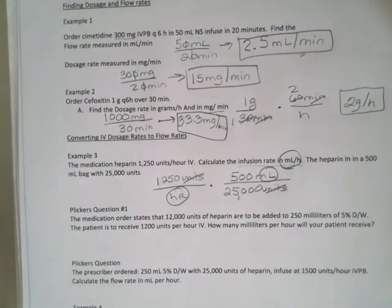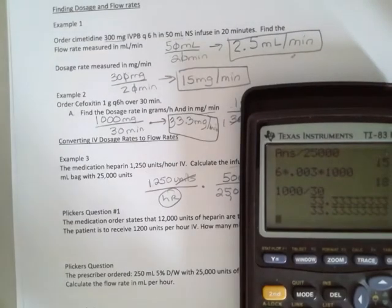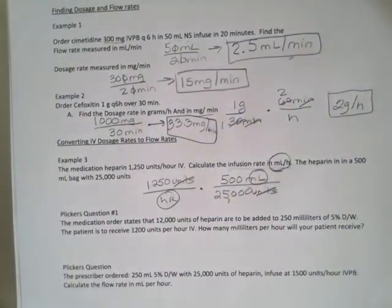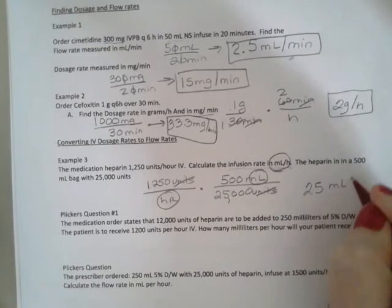I'm just going to take my calculator and do 1250 times 500 divided by 25,000. And I get 25 mLs per hour.